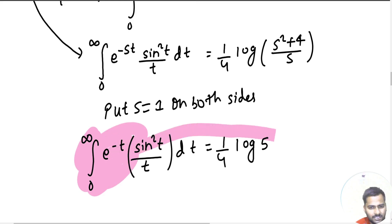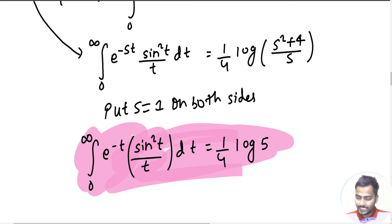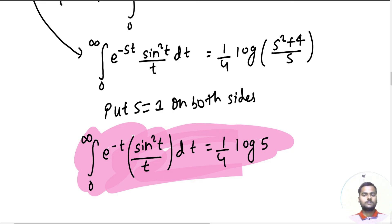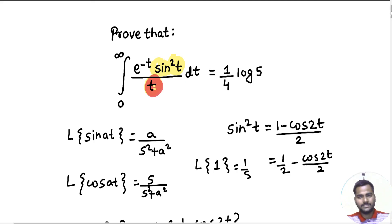So this was an interesting but lengthy problem. We started with Laplace of sin²t, made adjustments using trigonometry, then used the division by t property. After a lot of mathematics we used the definition on both sides to finish the problem. It was lengthy but not that difficult. That's it for today. We will see you with more problems — you can visit the Laplace transform playlist for more practice. Thanks again.